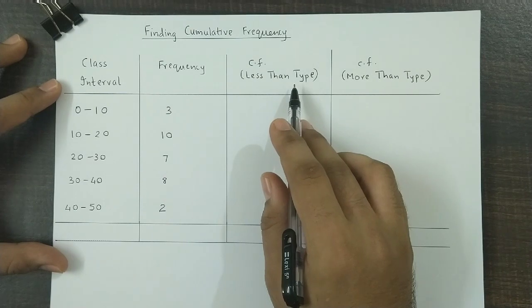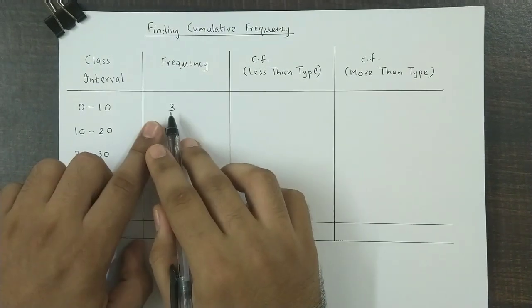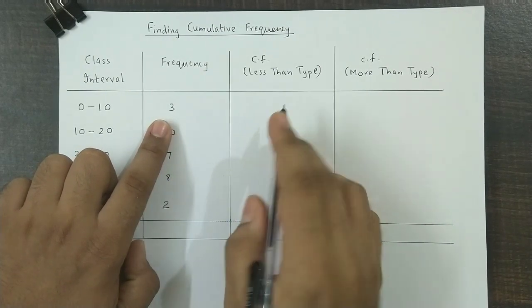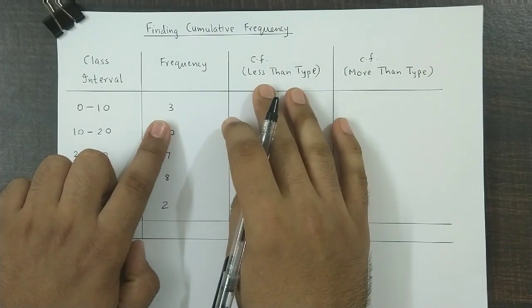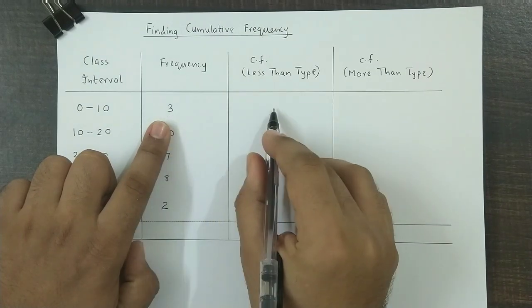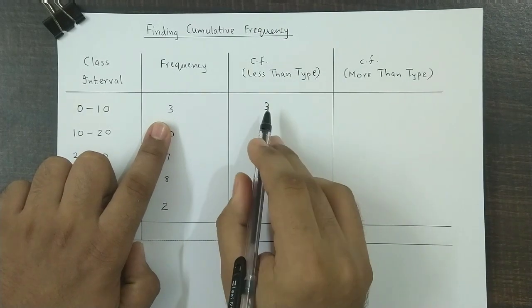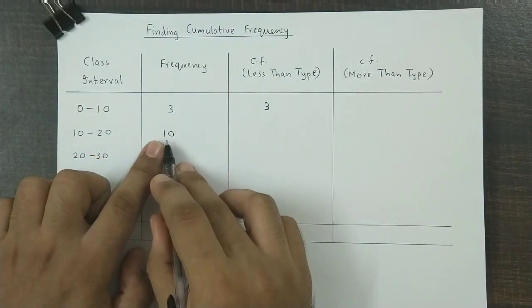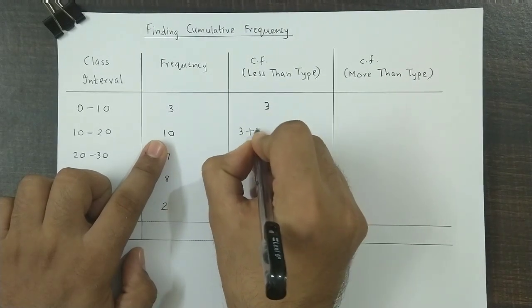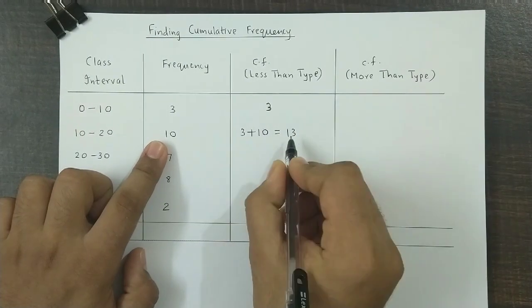Now to obtain the less than type cumulative frequencies from the given frequencies, the method is: the first frequency is noted down as it is. That is, 3 would be written as it is. Now this frequency 3 is added to the next frequency, so we have 3 plus 10, and that total is 13.